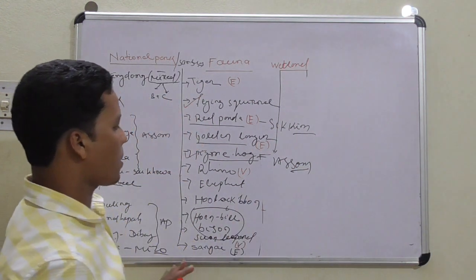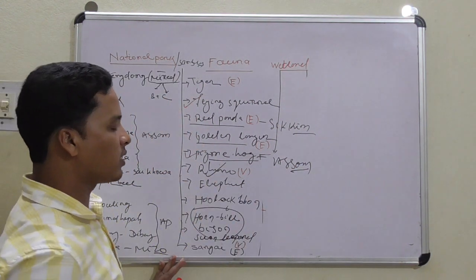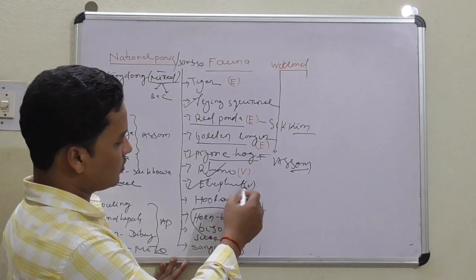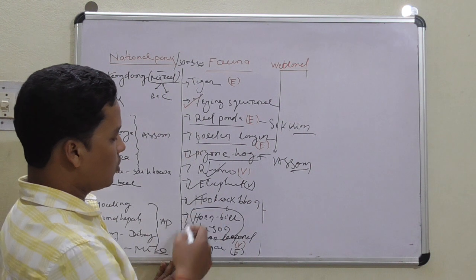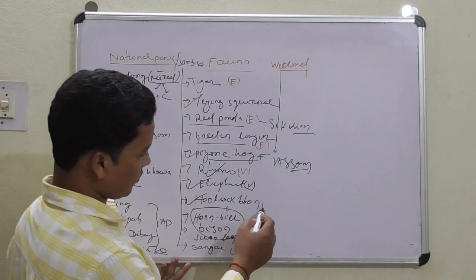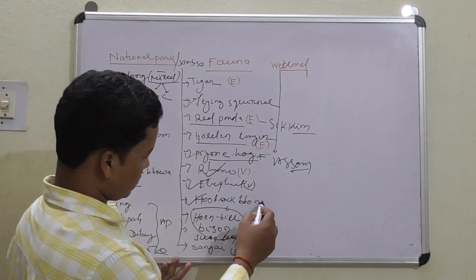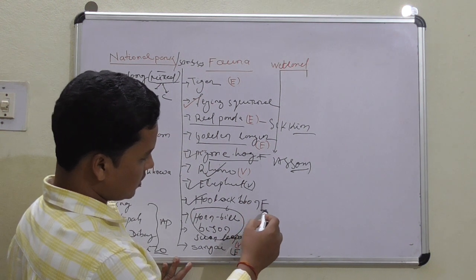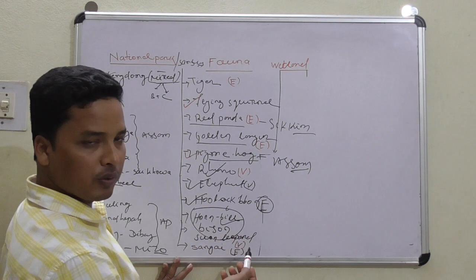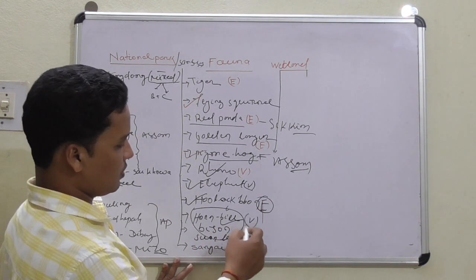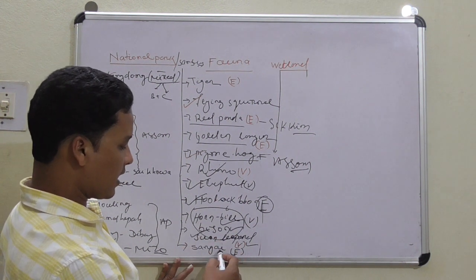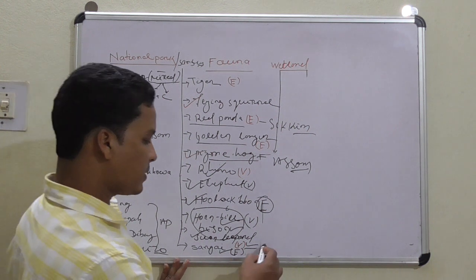Rhino, vulnerable, found in Assam. Elephant, vulnerable. Hoolock gibbon, endangered. Hornbill, vulnerable. Bison, snow leopards, vulnerable.